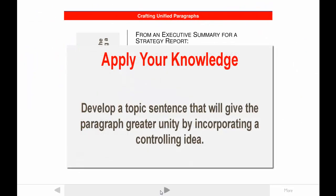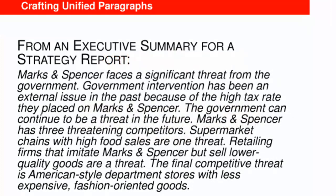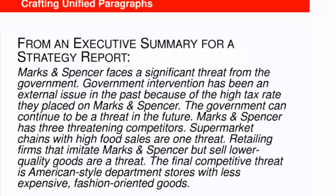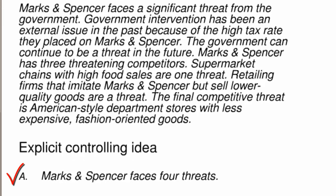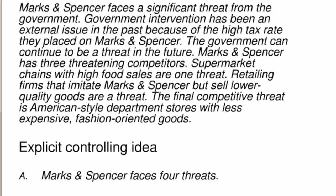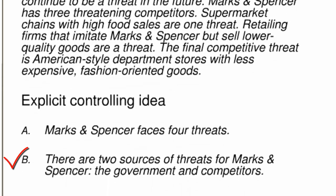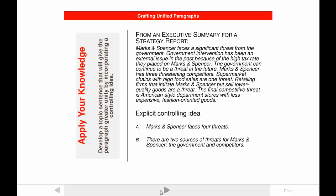It's time to check your understanding of paragraph unity by revising a passage you haven't seen before. It comes from an executive summary in a strategy report. The specific question asks that you develop a topic sentence to unify the details in the passage. You might decide that the controlling idea is something like the one shown here in A: Marks and Spencer faces four threats. Because there's no single correct answer, the controlling idea shown in B is also possible. Both A and B are accurate based on the details listed in the passage. However, each makes a slightly different point. Our inability to determine which is best is precisely why it's critical that writers provide an explicit controlling idea — if not, they allow readers to determine what it is for themselves.